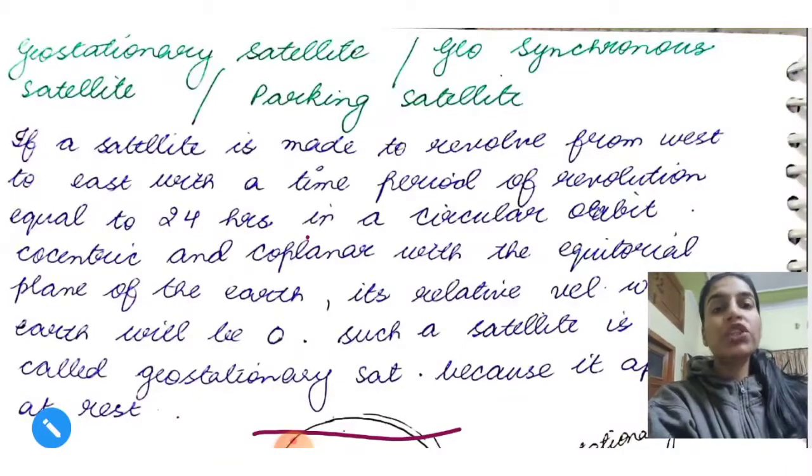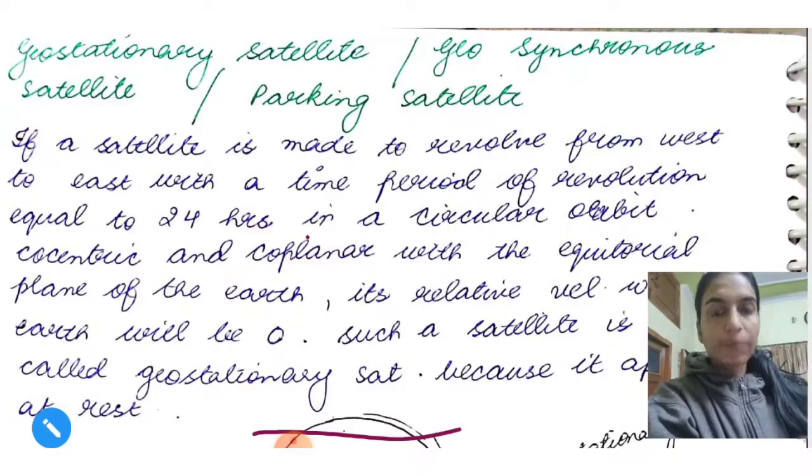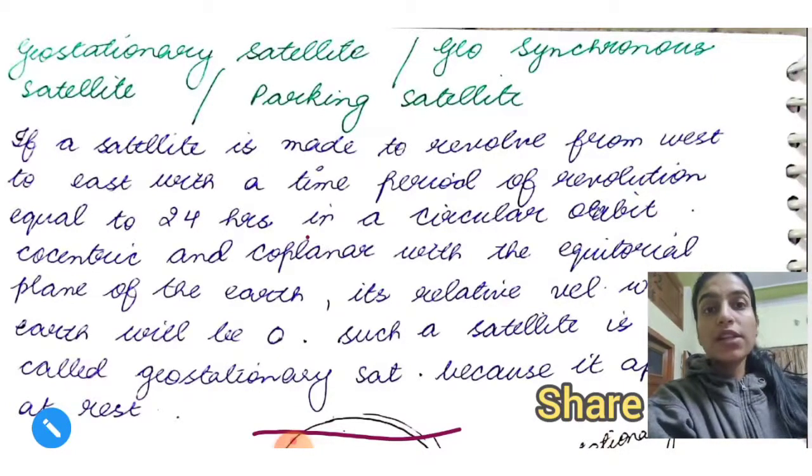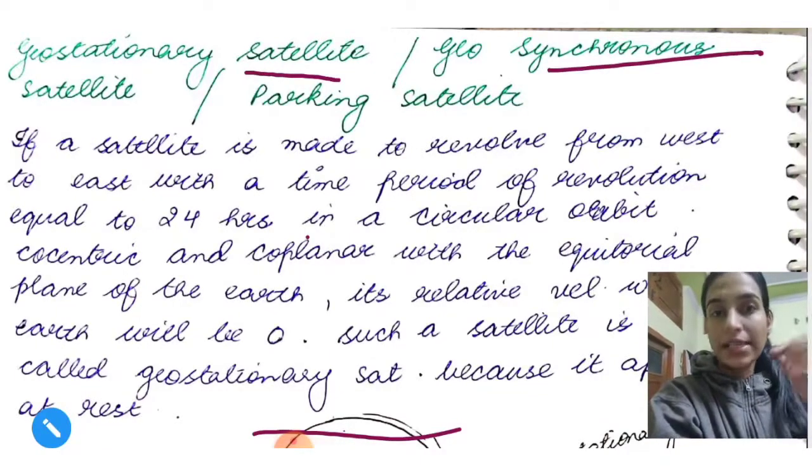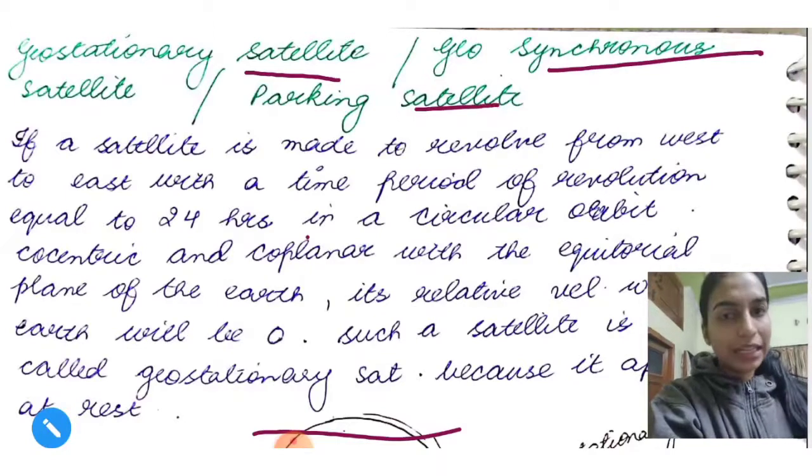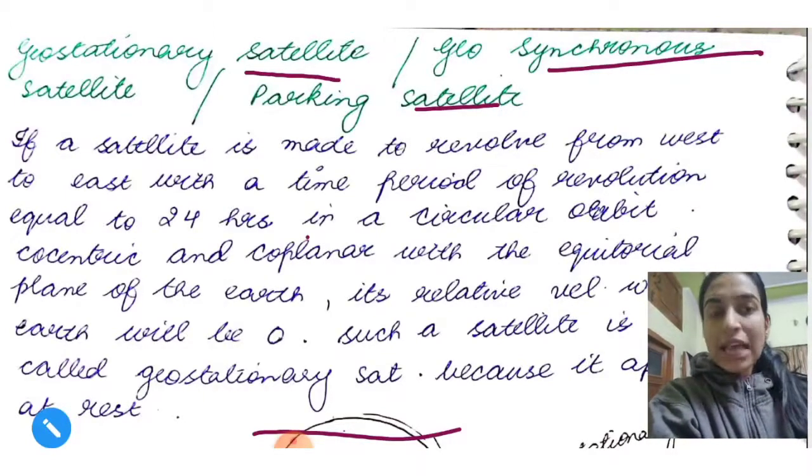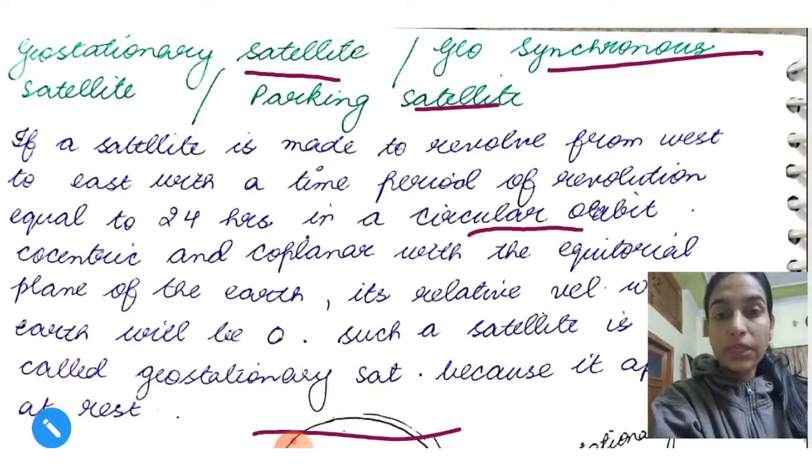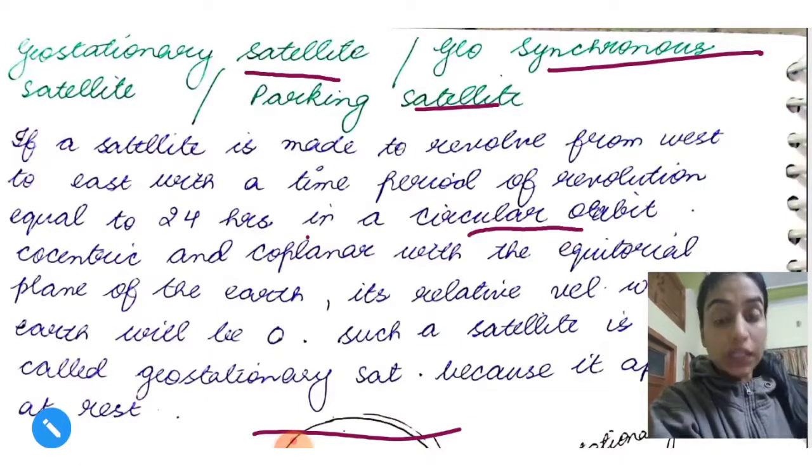The first satellite is geostationary satellite, which we call geosynchronous satellite or parking satellite. So what happens now? If a satellite is made to revolve from west to east with a time period of revolution about 24 hours in a circular orbit, co-centric and co-planar with the equatorial plane of the Earth.